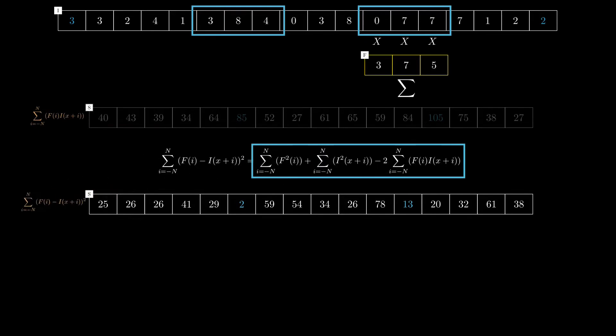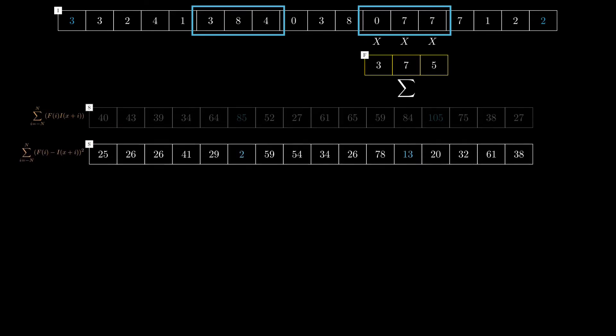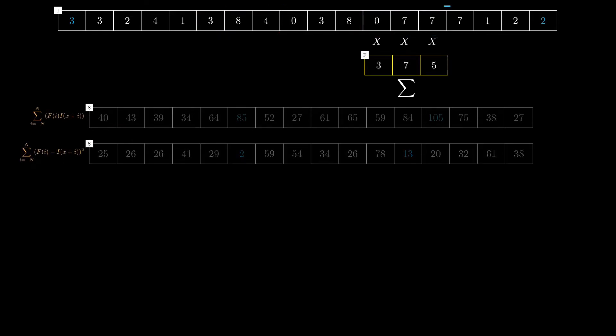So far we have seen two ways of computing the similarity between two vectors. The third possible way is to use what is known as normalized correlation. Normalization here means that we want to reduce the impact of magnitude of I and F, which helps in achieving the invariance to scaling of filter and image.